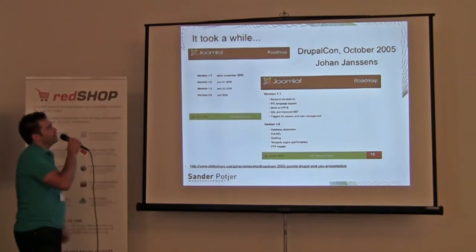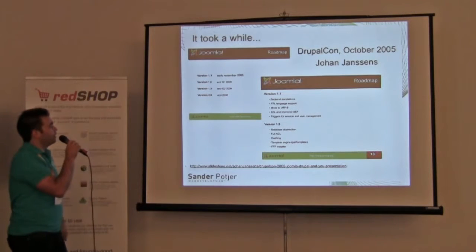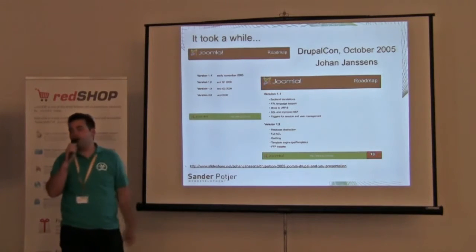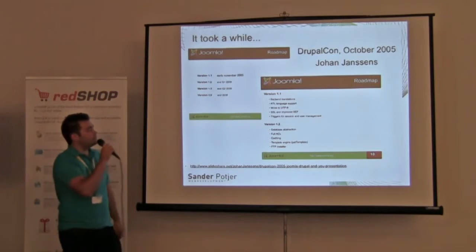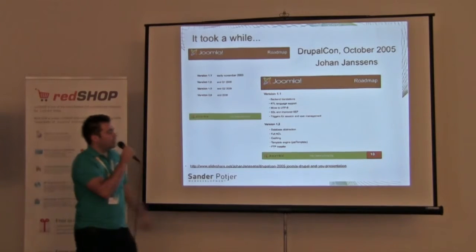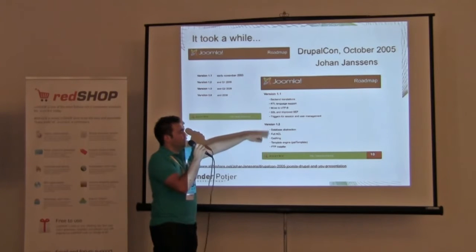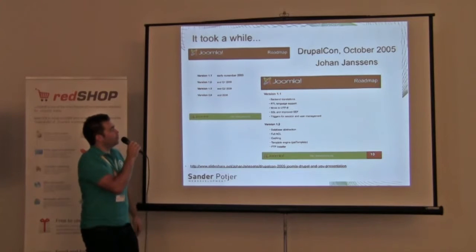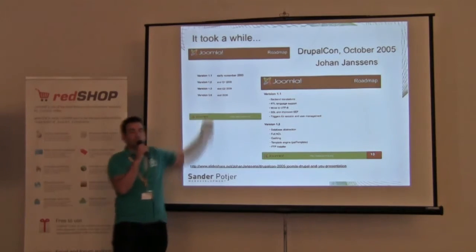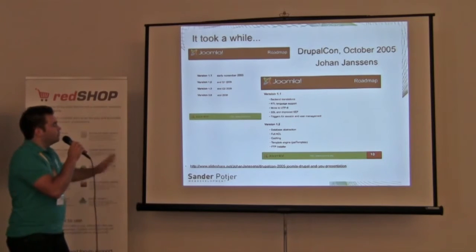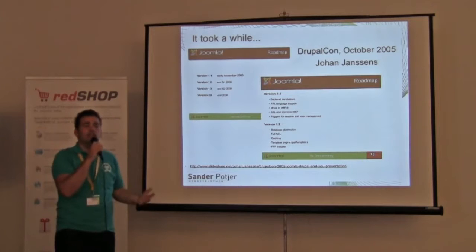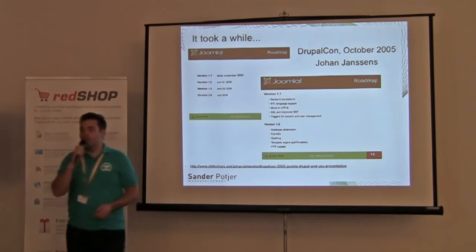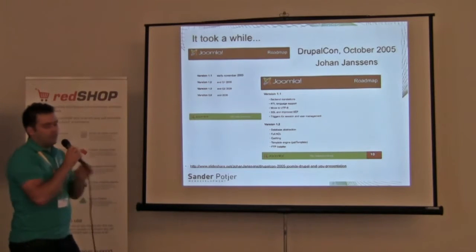Joomla 1.6 ACL goes back a long time. It was in the presentation of Johan Janss in October 2005 at a Drupal conference, where he told the version roadmap of Joomla. Version 1.2 would have a full ACL, planned for the end of Q1 2008. So we're now about three or four years later, and we finally have the ACL — in 1.6. Versions 1.1 and 1.2 never became available, but now we finally have 1.6 ACL.